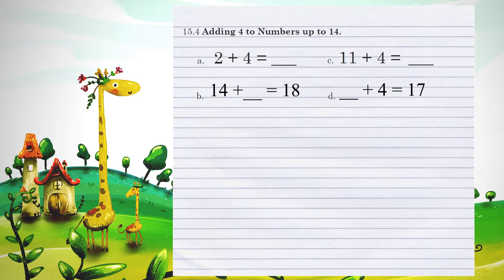Unit 15.4, adding 4 to numbers up to 14. Example A, 2 plus 4. 2 increased 4 times would give us 6.